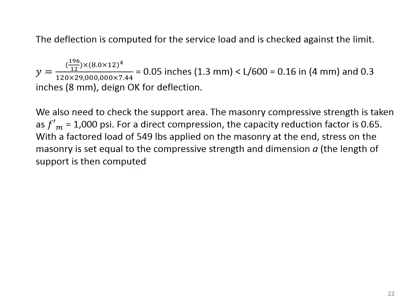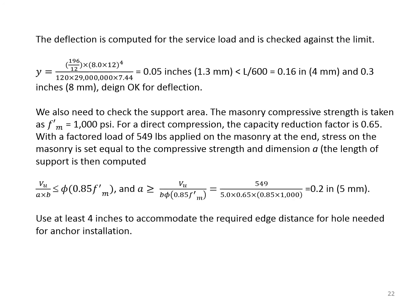As a last check, let's find out what is the bearing pressure on the masonry. That's the compression stress on the masonry. In this case, we are using the capacity of the masonry as 1000 psi. That's the compressive capacity without a reduction factor. For a direct compression, the capacity reduction factor is 0.65. And the factored applied reaction is 549. We know B, B is equal to 5, but we don't know A. So let's take A as an unknown. As you know, in masonry design, we use 85% of f'm as the compressive capacity used in our calculations. Furthermore, that is multiplied by φ, which is 0.65. So we set VU divided by A times B equal to this resisting value and solve for A. The minimum A is obtained as 0.2 inches.